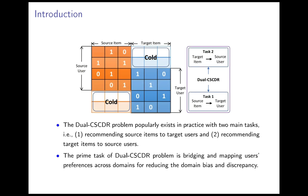The Dual-CSCDR problem popularly exists in practice with two main tasks: recommending source items to target users and recommending target items to source users, which are shown in the figure. The prime task of Dual-CSCDR problem is bridging and mapping user preferences across domains for reducing the domain bias and discrepancy.